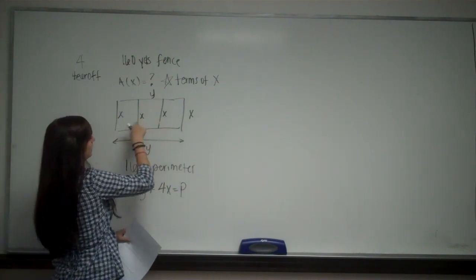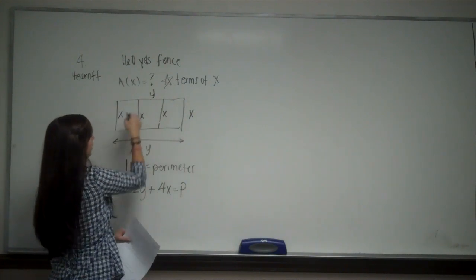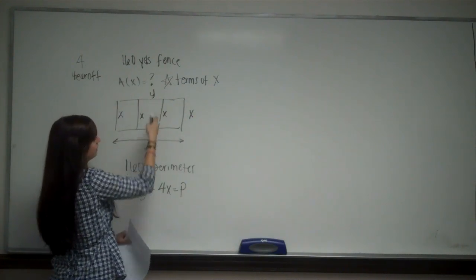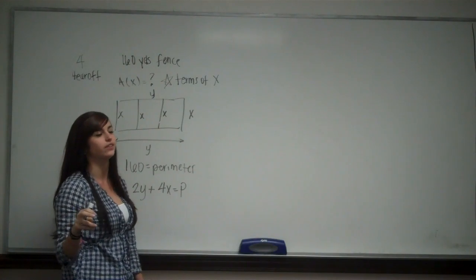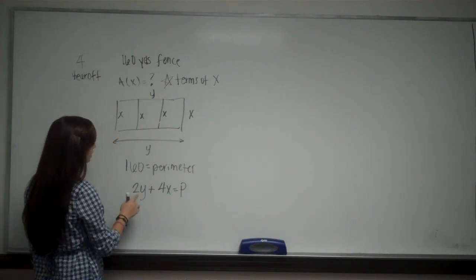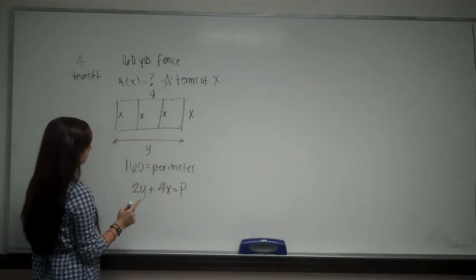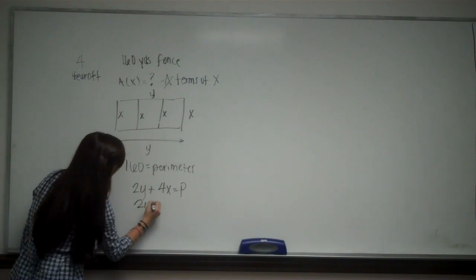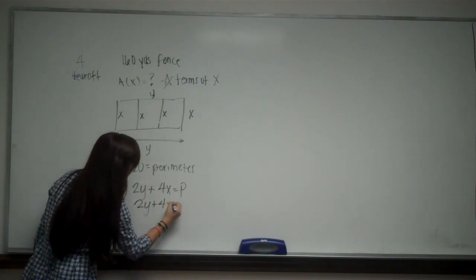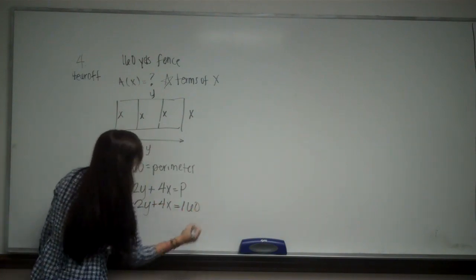x equals your perimeter. Because you have four x's here, because you can't just say two y. We also need to fence the inside parts. He needs fencing for those inside parts. So 160 also equals my perimeter. So I have 2y + 4x = 160.